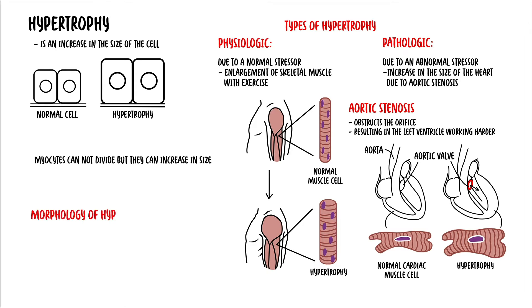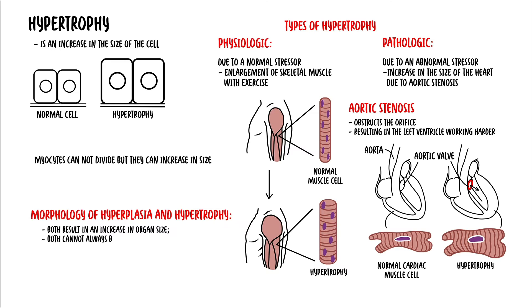Morphologically, hyperplasia and hypertrophy can look similar. They both result in an increase in organ size. Therefore, they cannot always be distinguished grossly, and microscopic examination is required to distinguish the two.